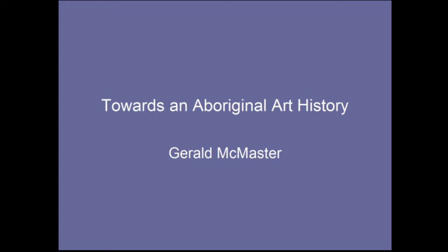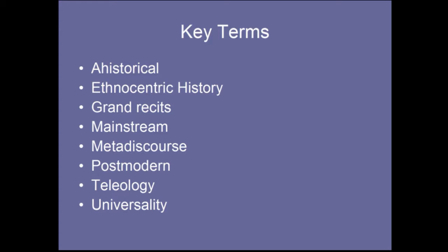This is why it's a good idea — because it is a 300-level class — that you have a dictionary handy, because there are going to be key terms that you are expected to be able to define and apply as part of your study. Some of the key terms you encounter in the reading are: ahistorical, ethnocentric, grand recit, mainstream, meta-discourse, postmodern, teleology, and universality.